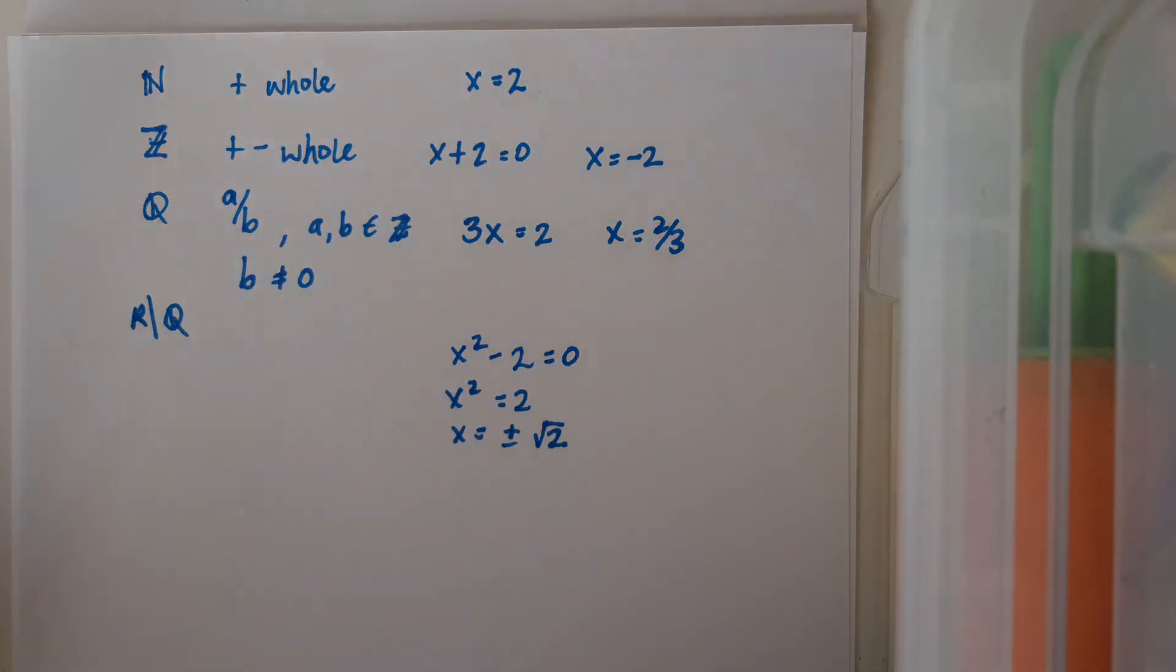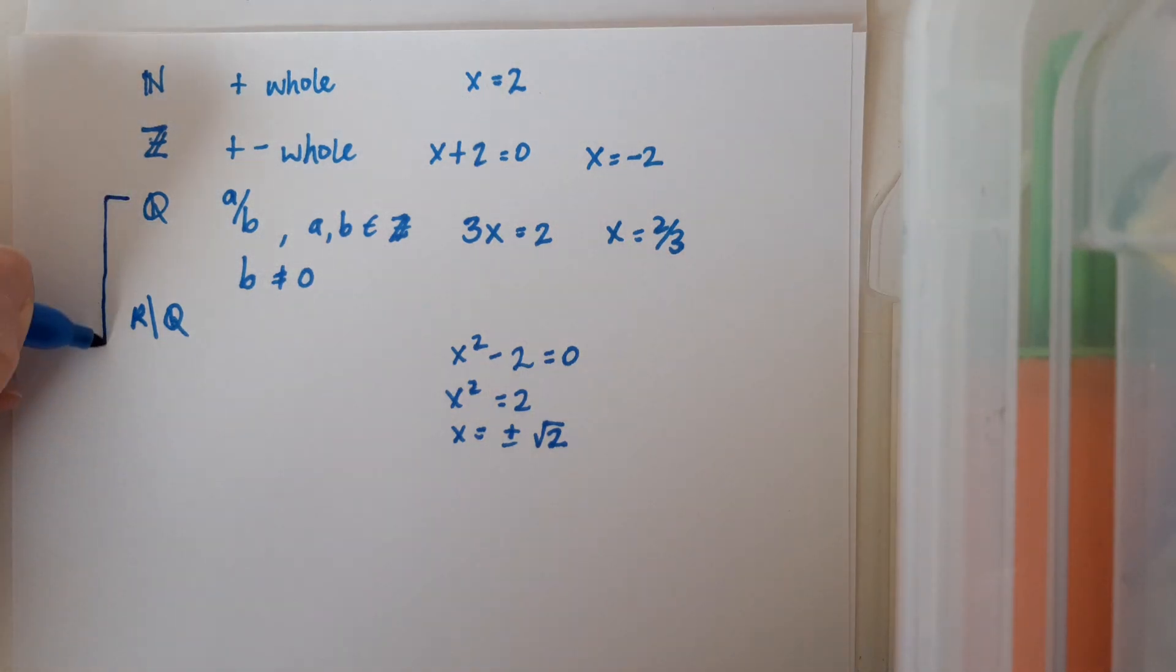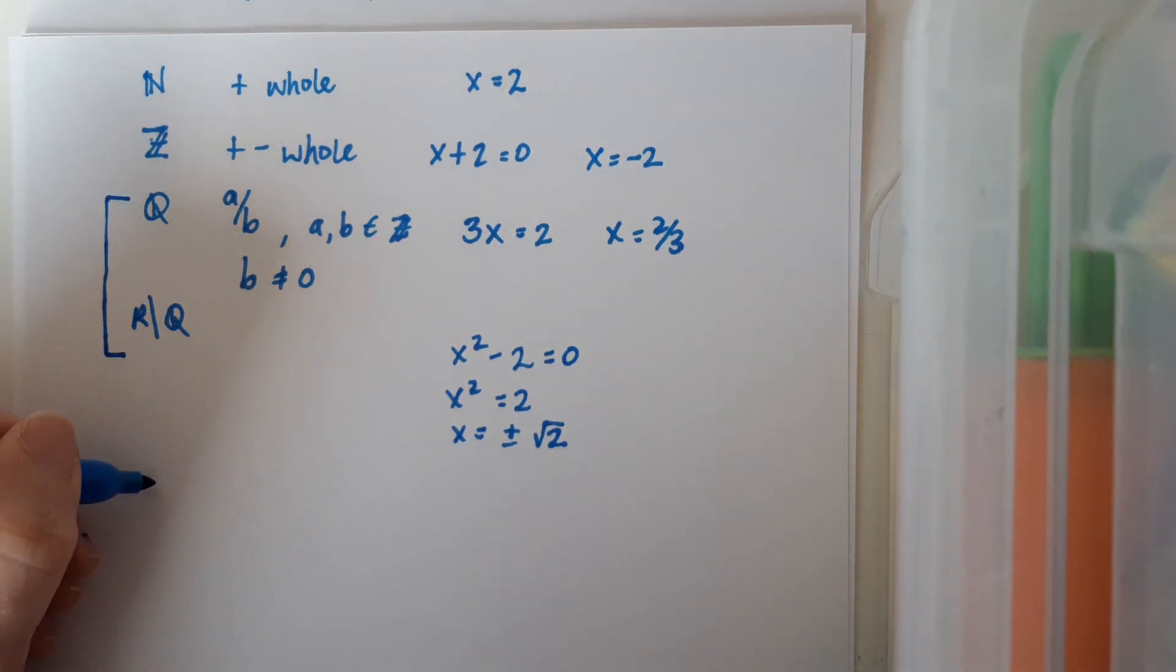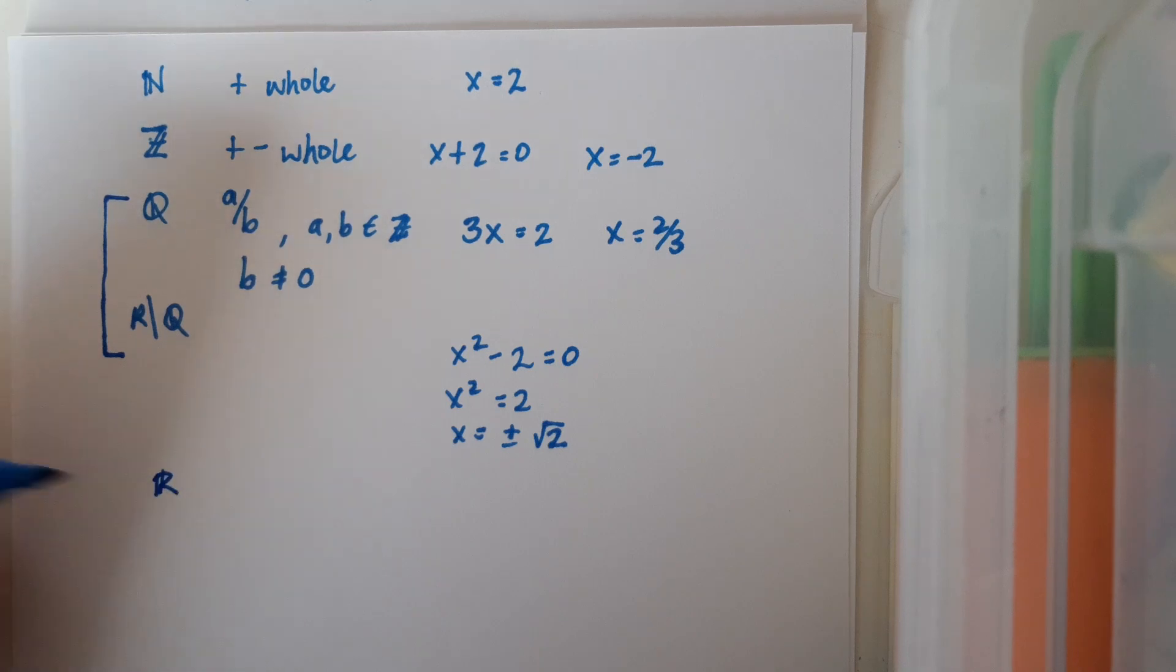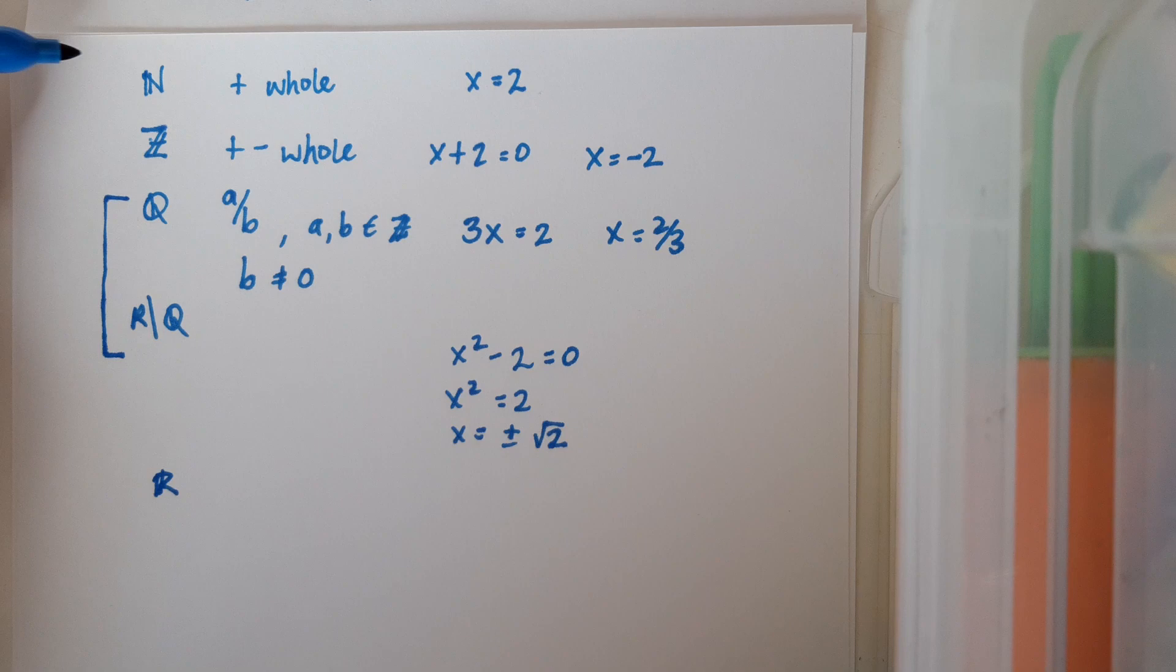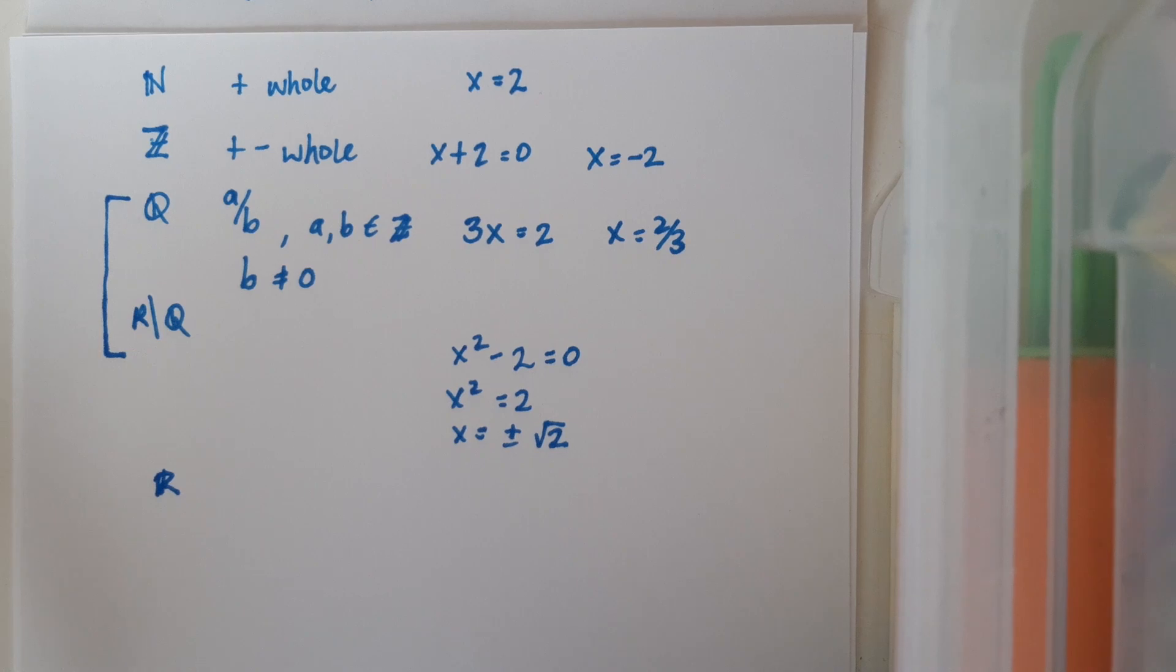And if you take rational and irrational numbers together, they form the group of real numbers. Real numbers are essentially all of these guys that we've seen already grouped together. And except for Q, each is a subset of the subsequent set.